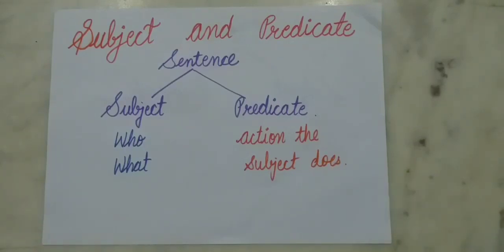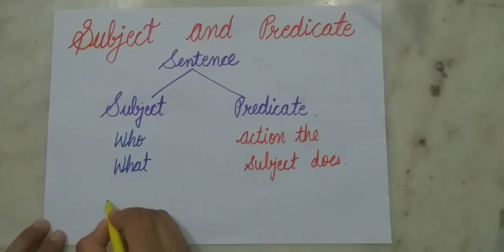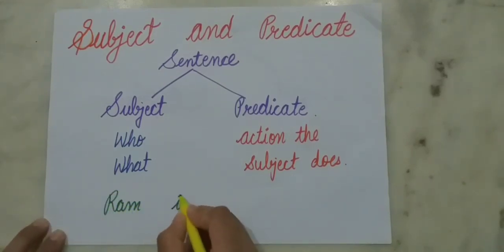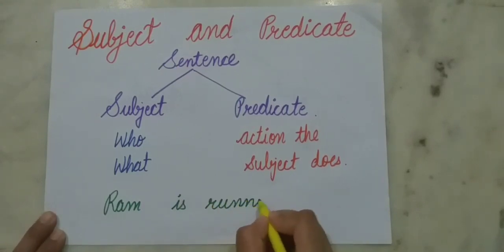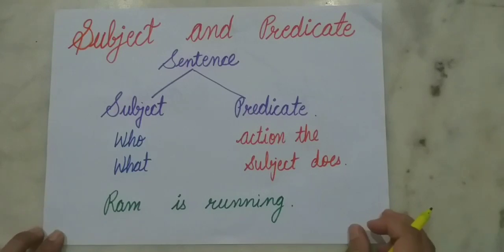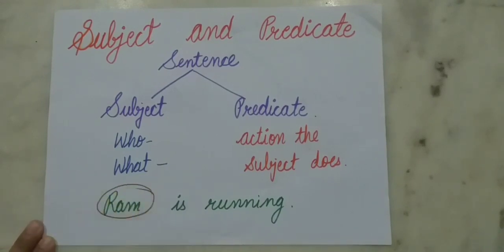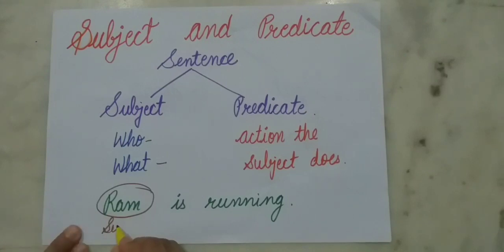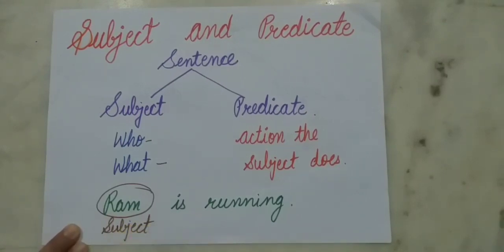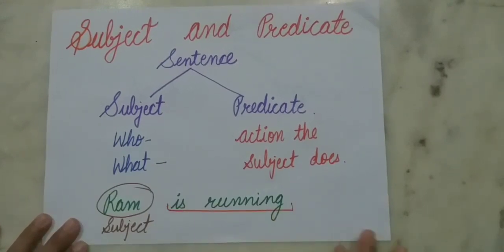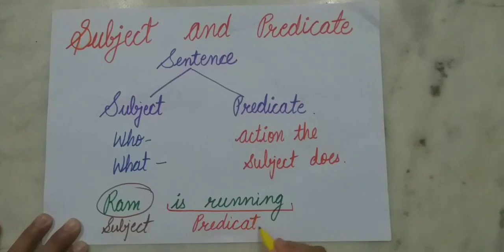Let's take an example. If I say 'Ram is running' — who or what are we talking about? We are talking about Ram. That means Ram is our subject. Whereas the rest of the line, 'is running,' is the action done by Ram. So this is called the predicate.